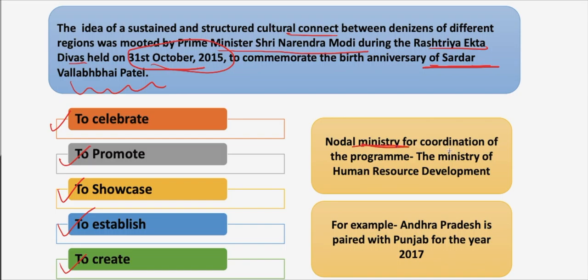The nodal ministry for coordination of this program is the Ministry of HRD — Human Resource Development. For example, in 2017, Andhra Pradesh was paired with Punjab. During that year, Punjabis would learn keywords in Telugu, a few Telugu books would be translated into Punjabi and vice versa, Andhraites would hold food festivals offering Punjabi dishes, and Punjabis would perform Andhra folk dances. This pattern of cultural adoption would be followed by all states and union territories.